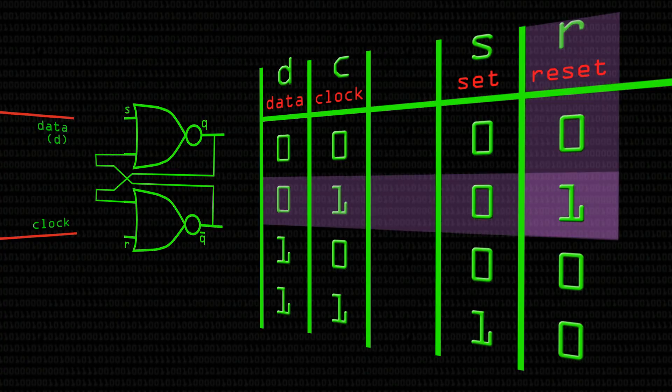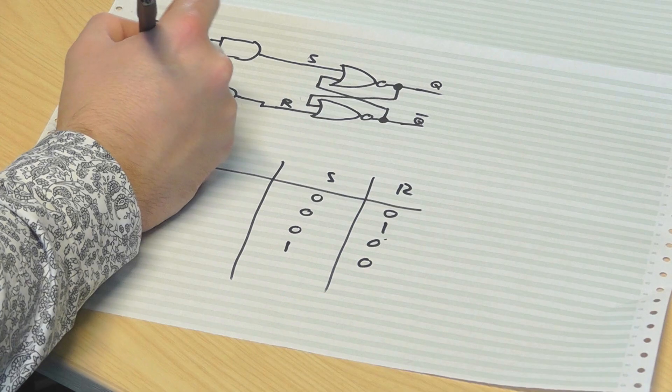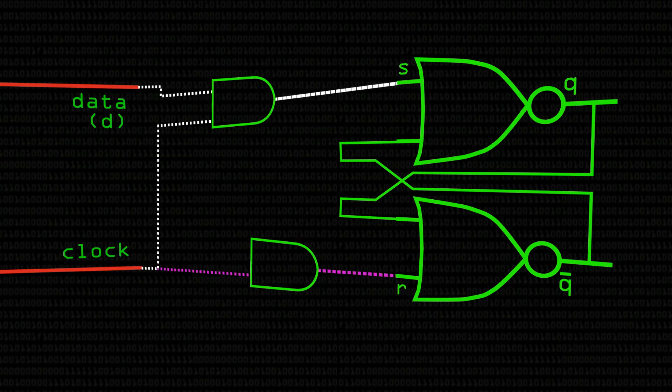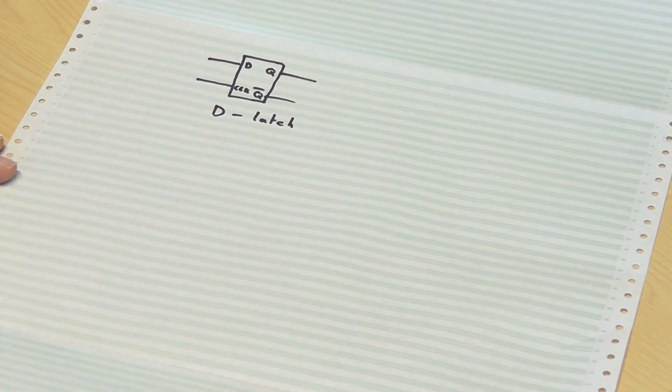We need to do the same to reset it — we want reset to be one when D is zero and clock is one. We can't simply OR them because one and one would also be true, and we wouldn't want reset and set to be high at the same time. So we use another AND gate with the clock signal, but we also need a signal that is true when D is zero, so the easiest way is to use a NOT gate and connect that into the circuit. Normally when drawing circuits, this takes up a lot of space, so we reduce it down to a simple rectangle — and this is what's referred to as a D latch.